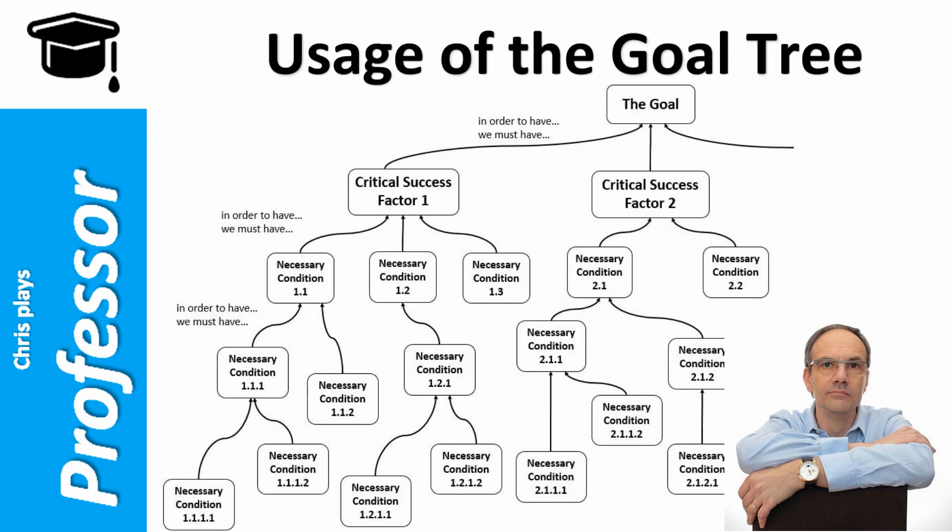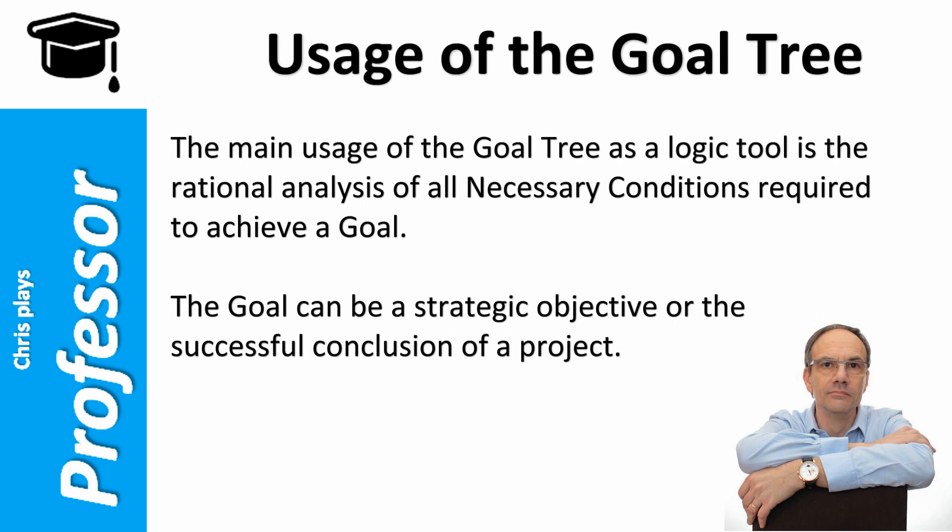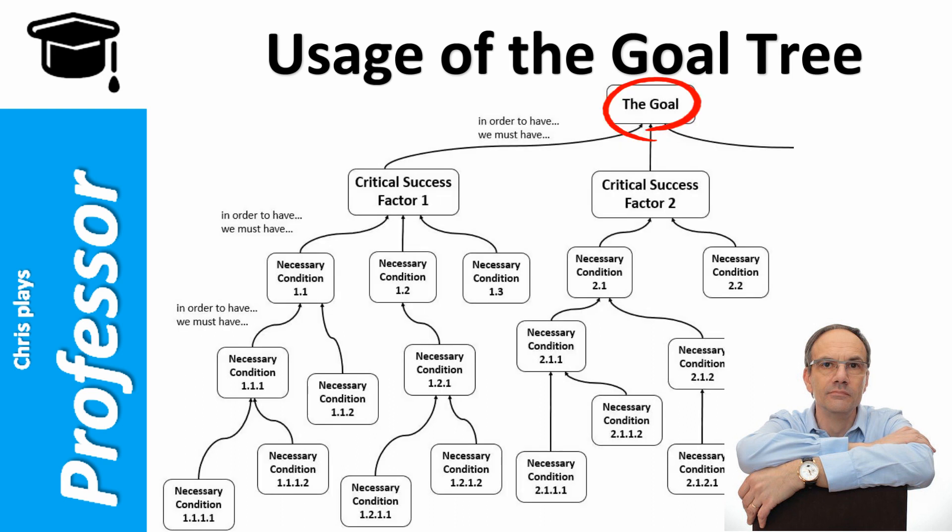The main usage of the goal tree as a logic tool is rational analysis of all necessary conditions required to achieve the goal. The goal can be a strategic objective or the successful conclusion of a project. In any case, the goal is the last milestone, the finish line of the undertaking.